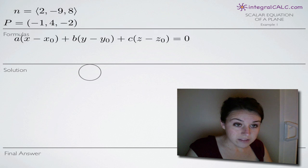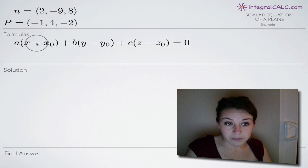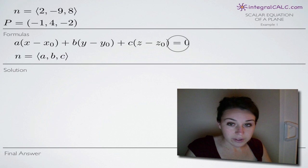When you're finding the scalar equation of the plane, the formula that you're always going to be using is a(x - x₀) + b(y - y₀) + c(z - z₀) = 0.